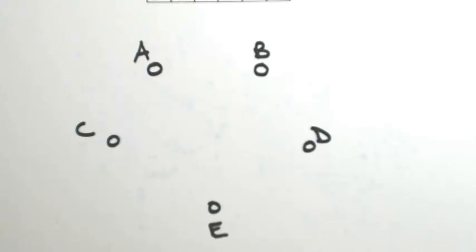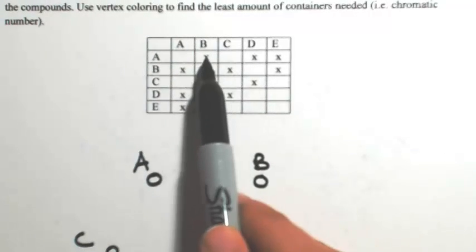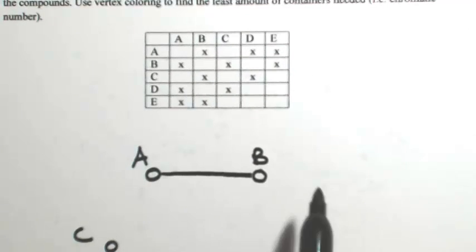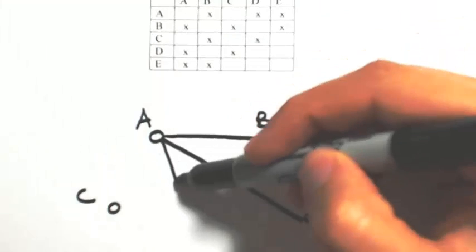So anything with an X we're going to connect. So looking at A, we have connections between B, D, and E. So from A I'm going to go to B and D and E.